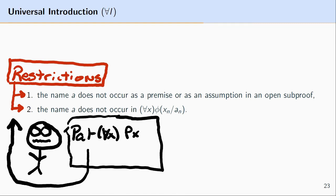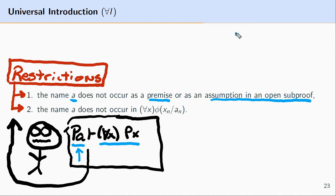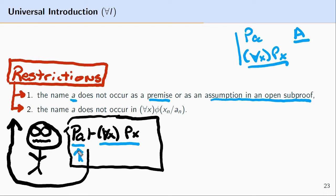Whenever you're thinking about using universal introduction — reasoning from PA to for all x, Px — make sure you don't violate either of the two restrictions. First, the name A cannot occur as a premise or in an assumption in an active or open sub proof. For example, if we reason to PA by making an assumption, we couldn't immediately write for all x, Px. This would be like saying: assume Alfred has property P, therefore everyone has that property.